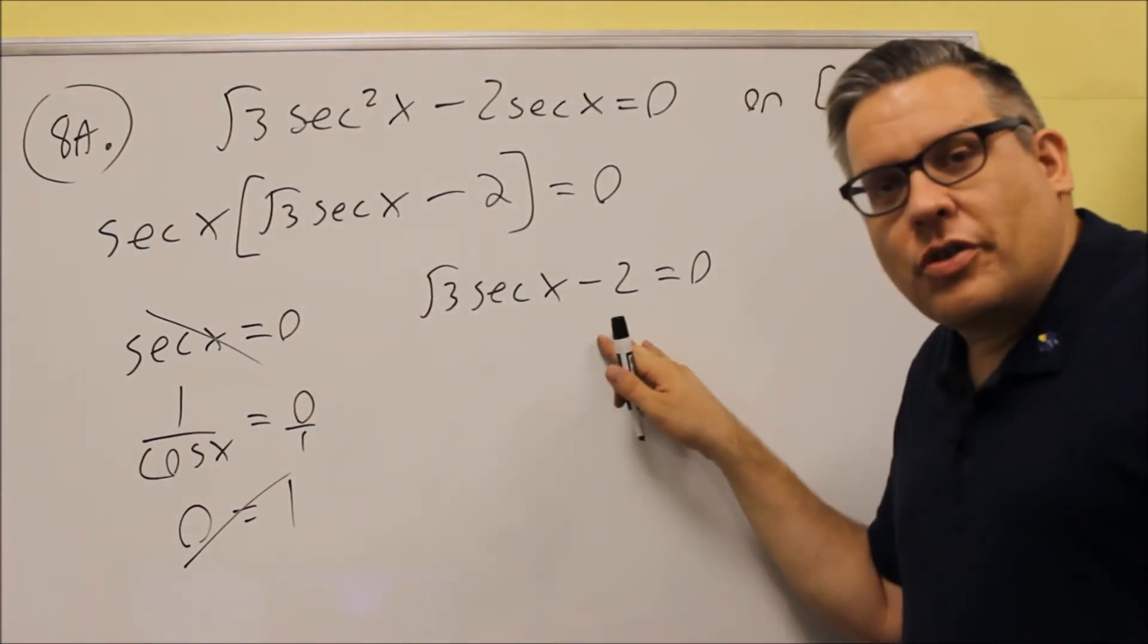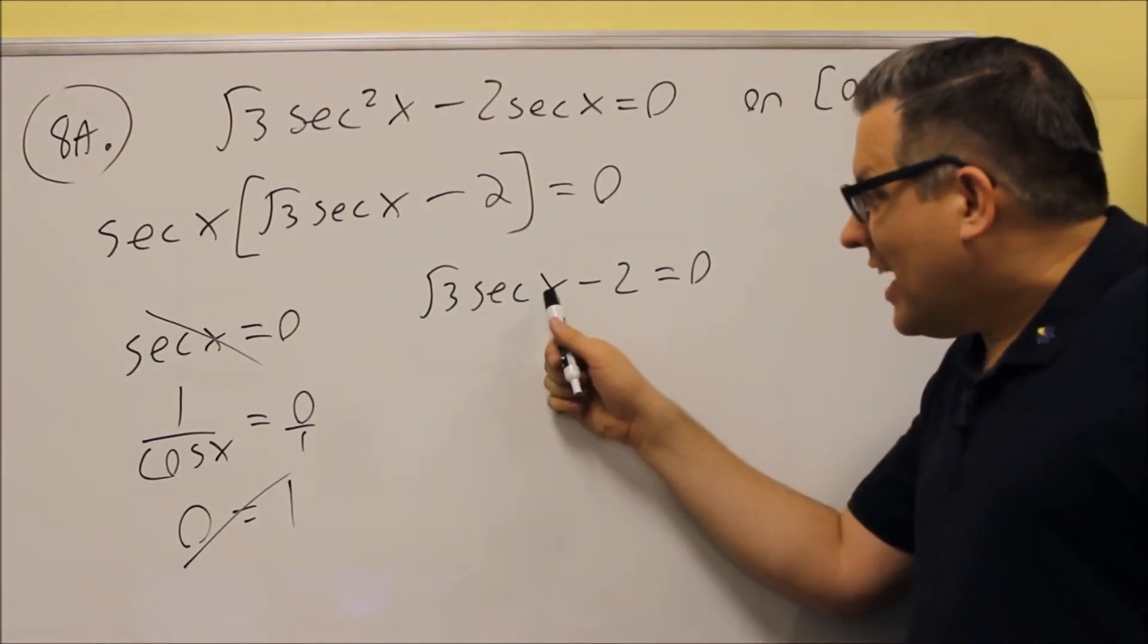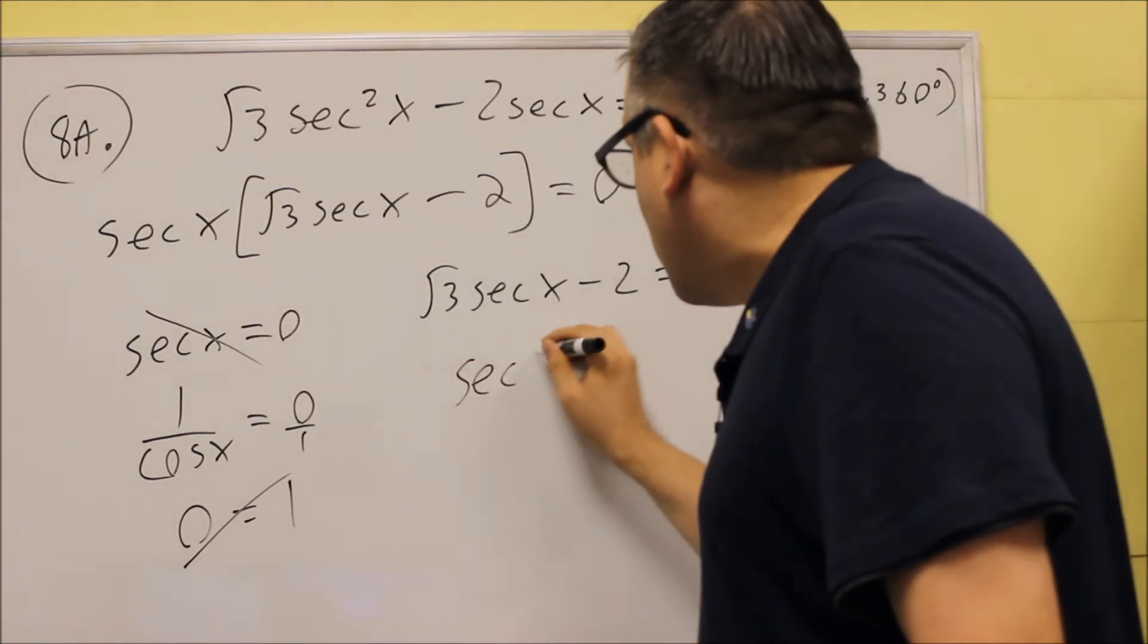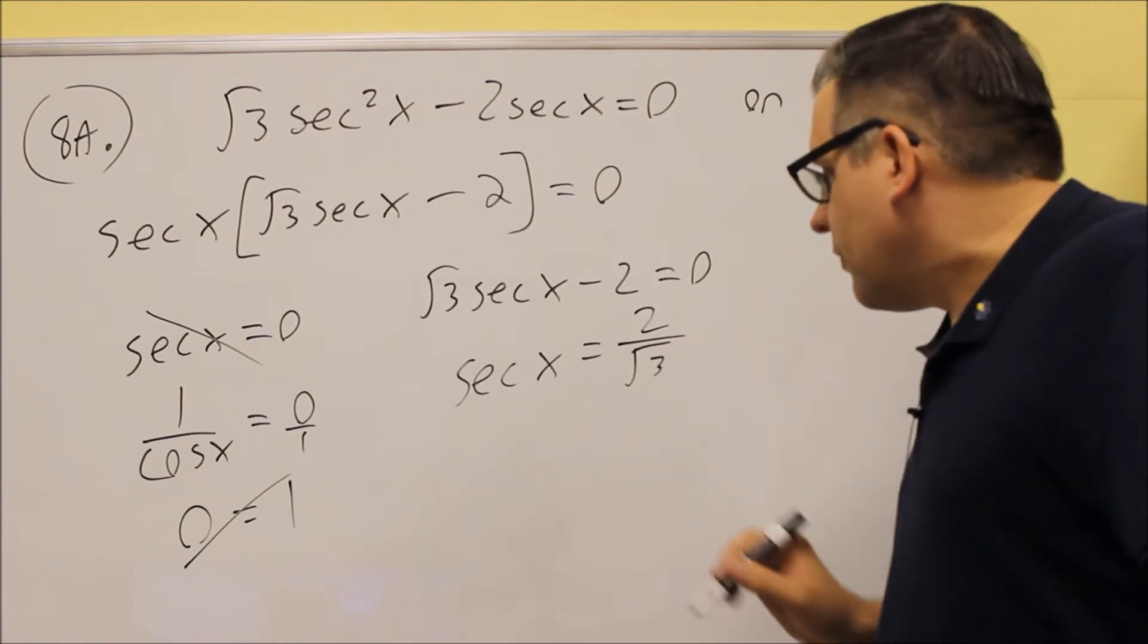So we are going to move on to this one here. Now this one I want to solve for secant. I will do that by adding two and dividing by square root of three.